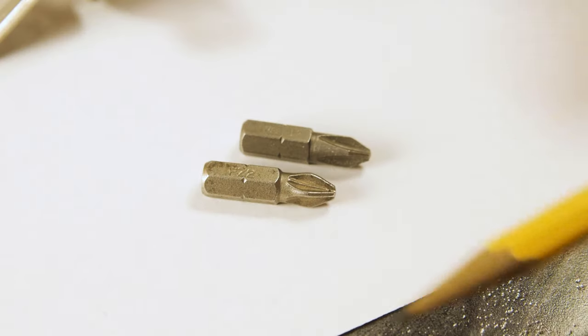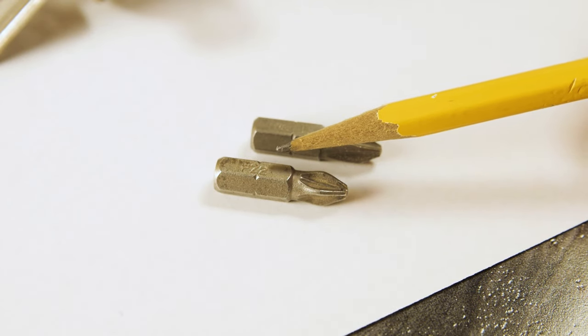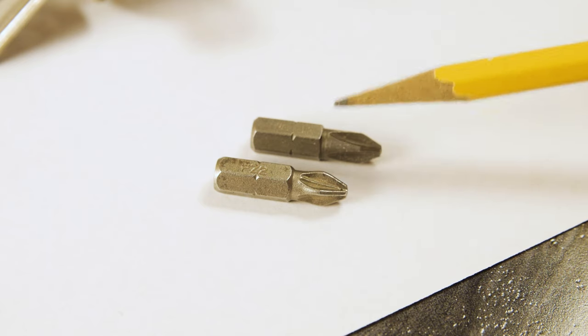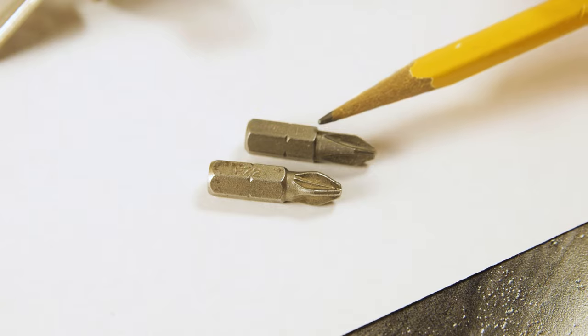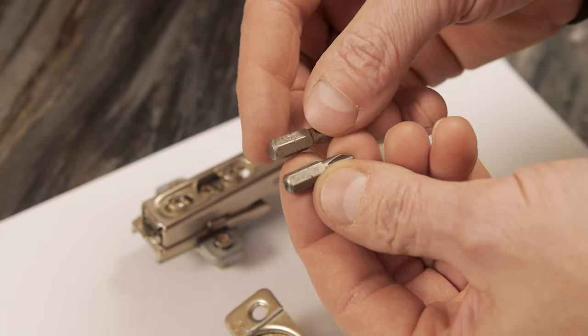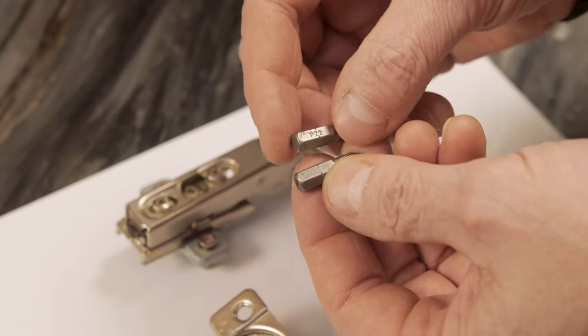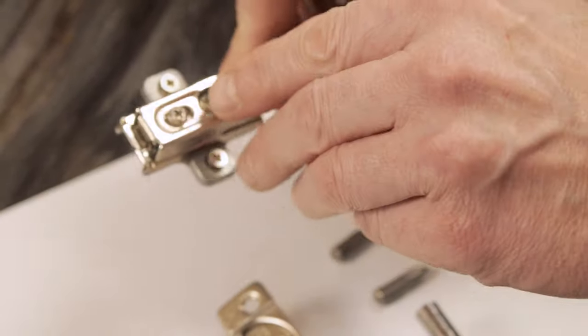You don't get that tight feeling here that you would with a posi drive bit, which really locks in tight. You can tell the difference. This one has an indication marking on it called PZ2, where this is simply a P2 driver bit. If you go to the hardware store or Home Depot, they offer both types of bits, and you want to make sure you have the right one for your hinge and the hinge screw.